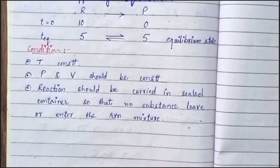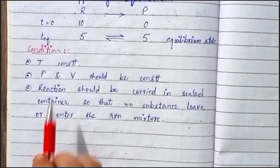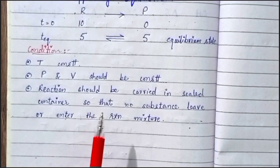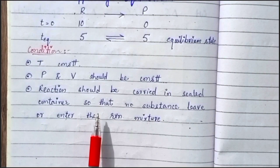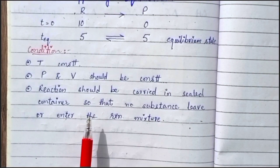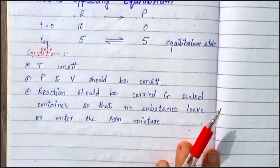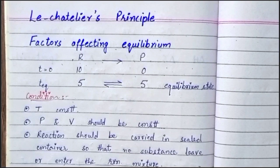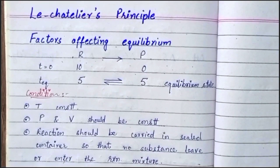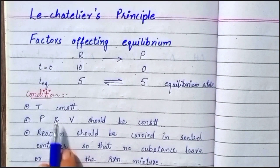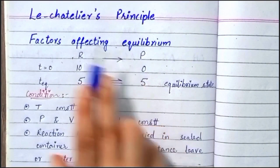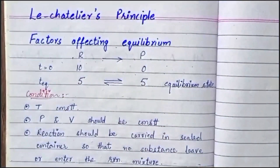If these conditions are not fulfilled — if we change the pressure, volume, or the concentrations of reactants and products — then the equilibrium will be disturbed. The reaction will shift again, either in the forward or reverse direction. This equilibrium effect is what we discuss in Le Chatelier's Principle.